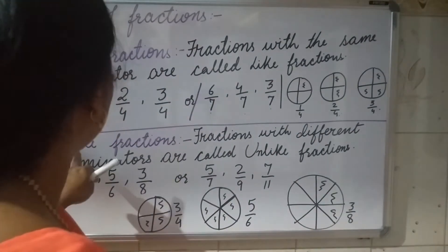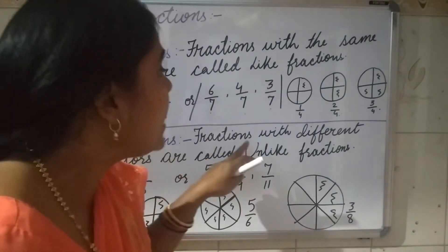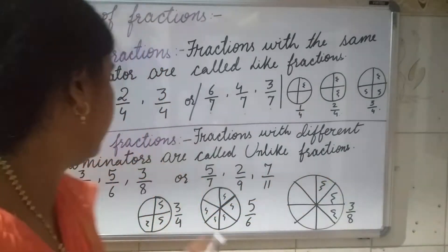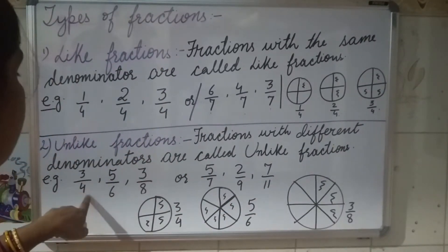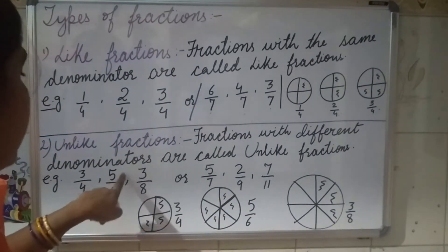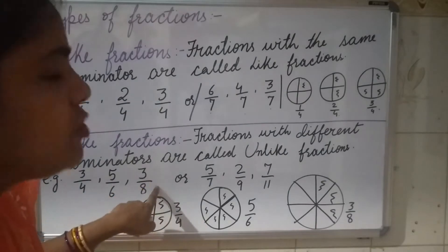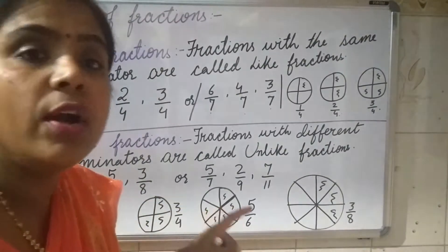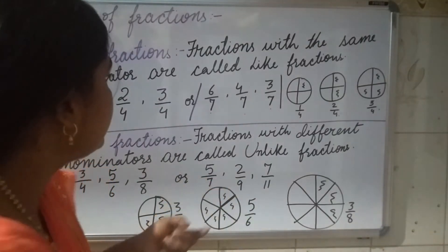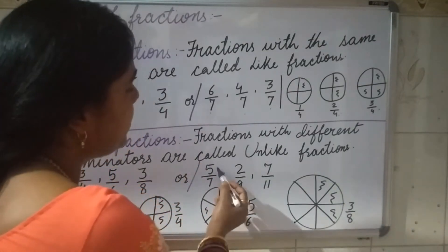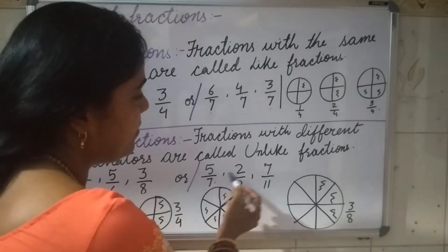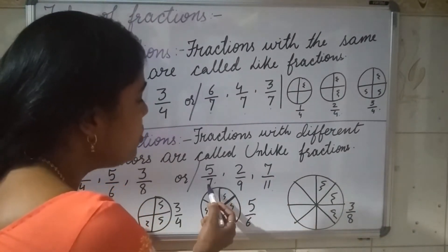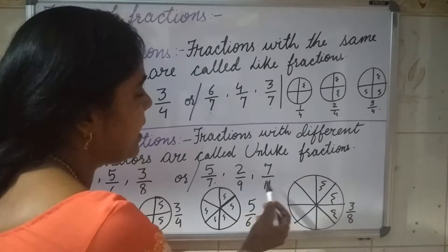Next is unlike fraction. Fractions with different denominators are called unlike fractions. For example, 3/4, 5/6, and 3/8 — all three denominators are different. Another example: 5/7, 2/9, and 7/11. Here also the denominators are different: 7, 9, 11.